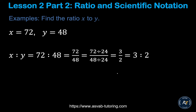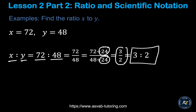Let's do another example. If x equals 72 and y equals 48, then x ratio y is 72 ratio 48. Simplifying by dividing both top and bottom by 24 gives you 3 over 2, so the ratio is 3 ratio 2.